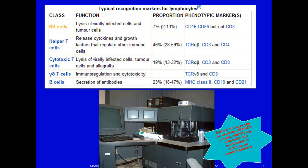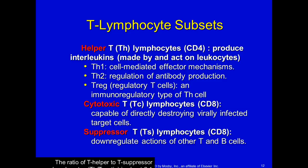Natural killer cells are able to lyse virally infected cells and tumor cells; they have CD16 and CD56 markers. Helper T cells release cytokines and growth factors that regulate other immune cells — they have CD3 and CD4. Cytotoxic T cells lyse virally infected cells, tumor cells, and allografts — they have CD3 and CD8. Notice: cytotoxic has CD8, helper has CD4.